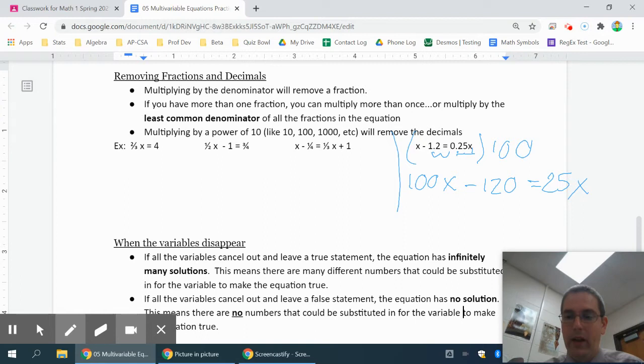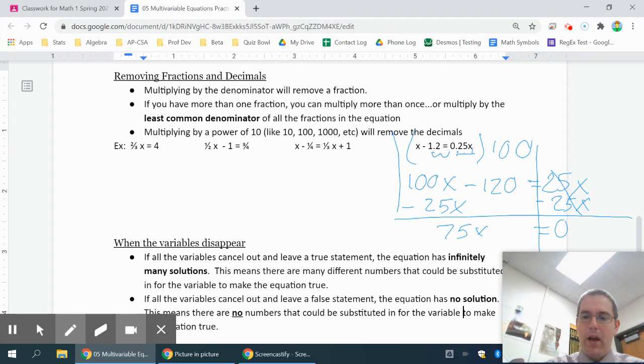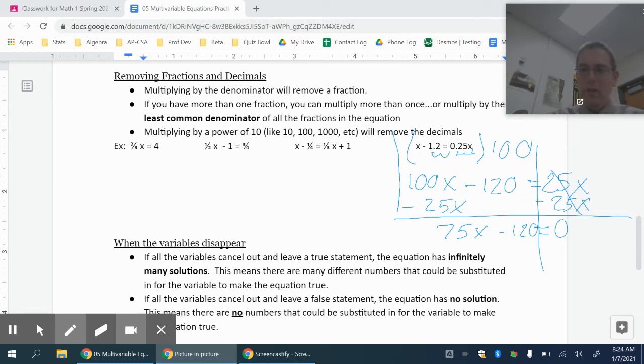That's why I picked 100, because I knew it would move the decimal two places and get me what I needed to have. Now generally what I do is I subtract the positive x's because I don't like creating negatives when I don't have to. It's okay for everything to cancel out on this side temporarily.